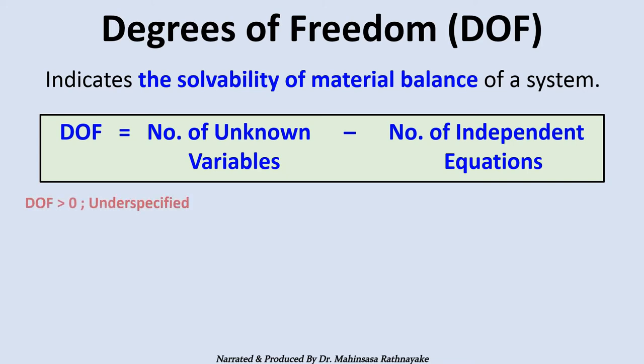If the degrees of freedom is larger than zero, the system is under-specified, that means not enough information to solve the system. If degrees of freedom is lower than zero, the system is over-specified, that means too many information to solve the system. If degrees of freedom is equal to zero, the system is exactly specified, that means enough information to solve the system.